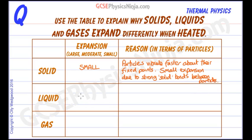In a liquid, the expansion is a little bit more — it's just moderate expansion. The reason is that the bonds in a liquid are weaker than in a solid. So as you add thermal energy and the particles can move around faster, they can move further apart from each other because the bonds don't hold them that tightly together.